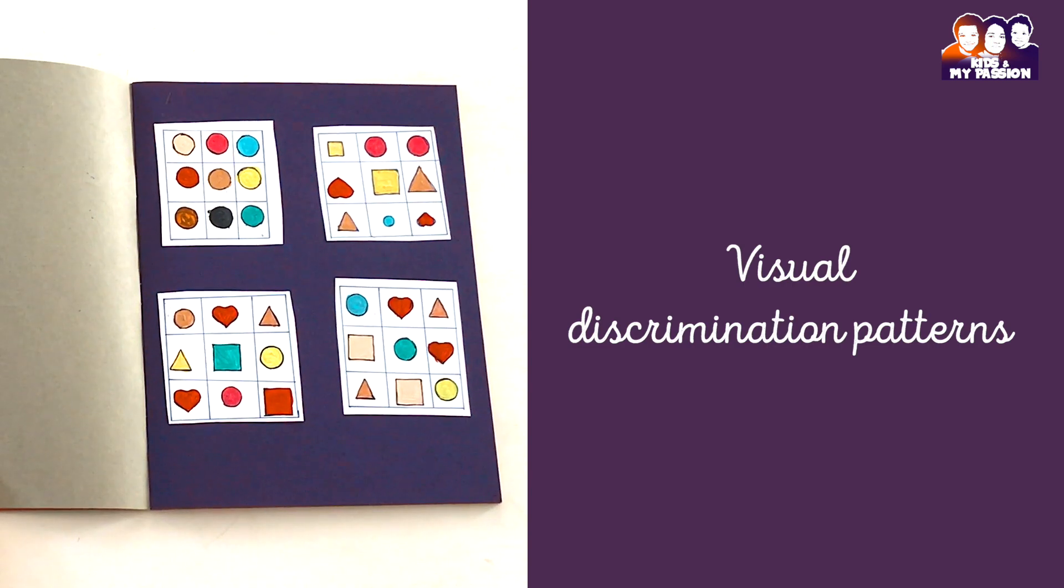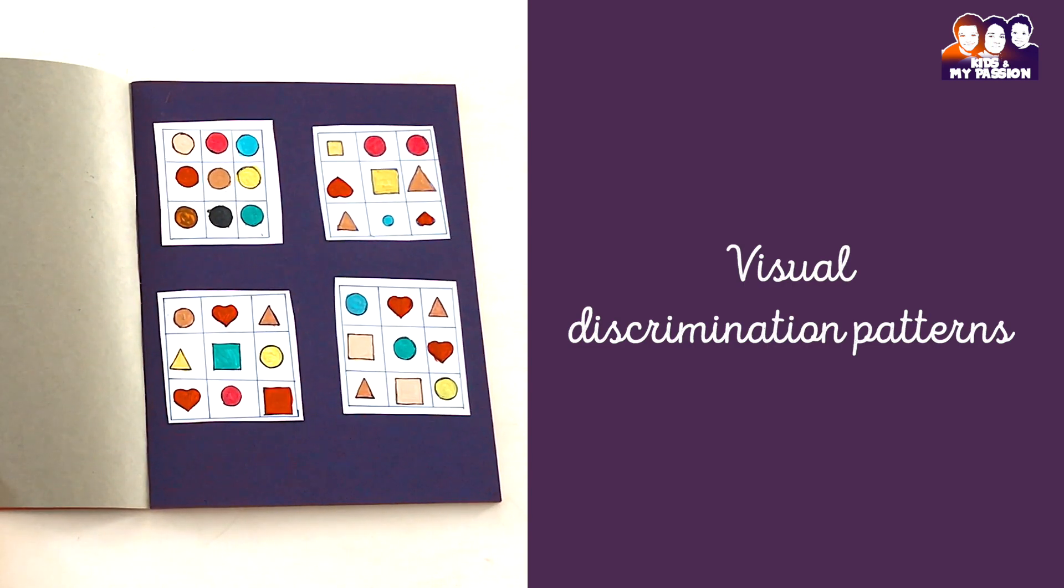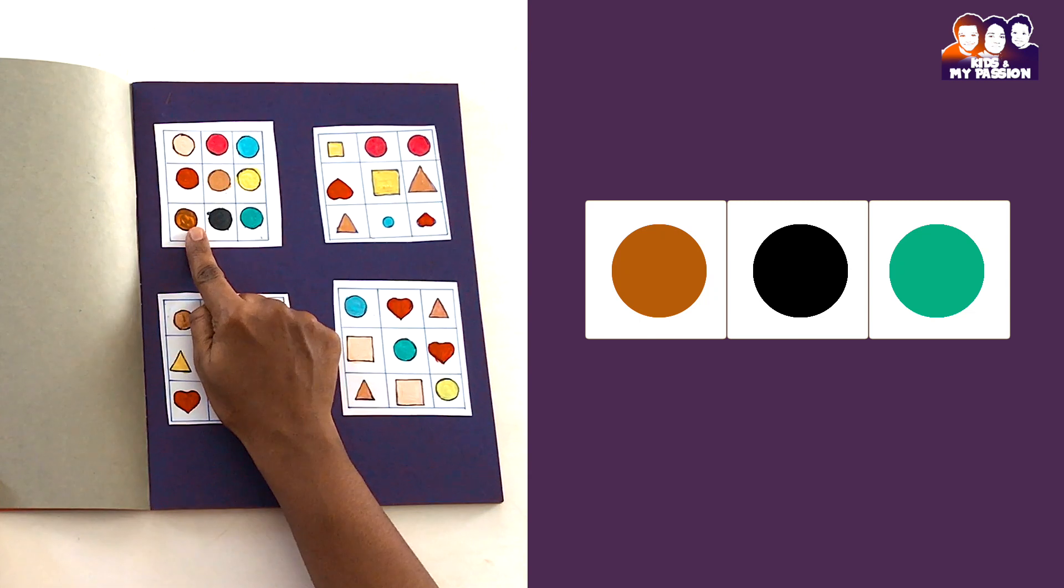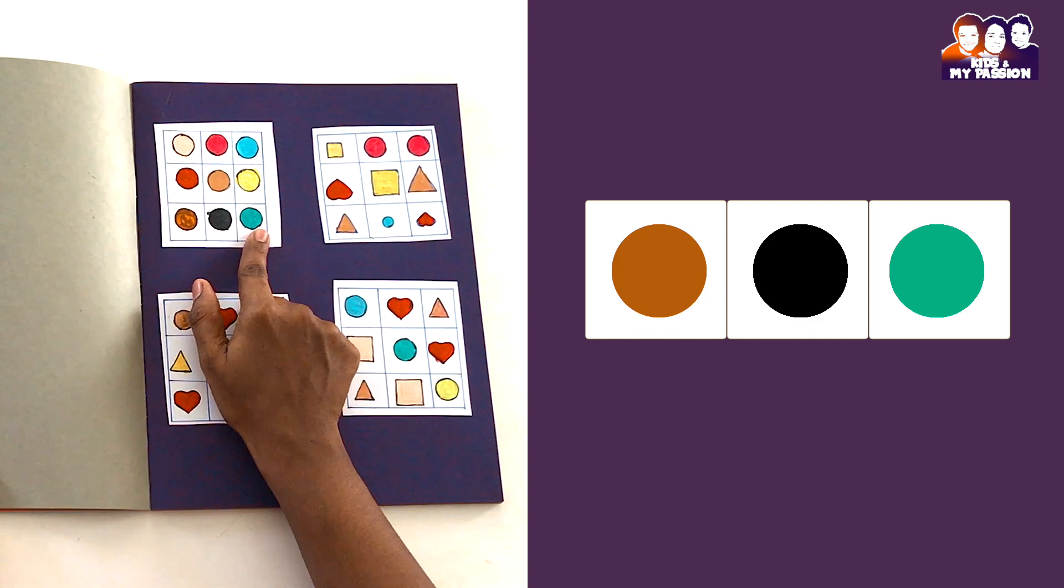Third activity: this activity is based on visual discrimination. We have four pictures. First picture, in the third row, we have three colored circles: brown, black, green. So you can ask your kid, what is an adjacent color to the black circle? That is green, brown.